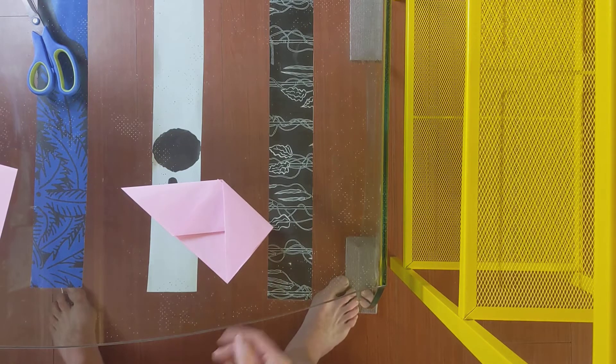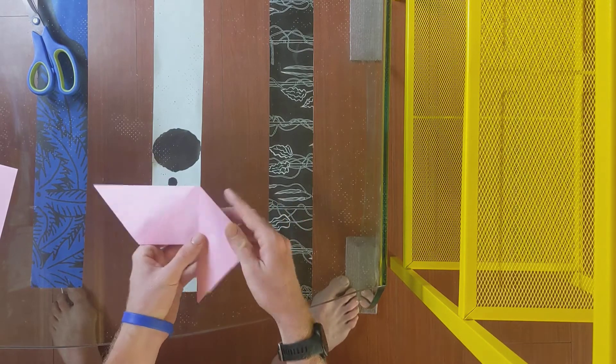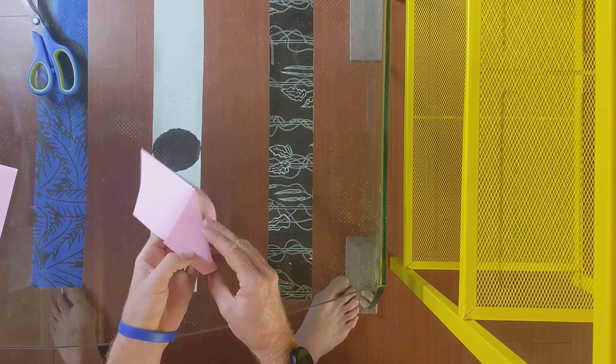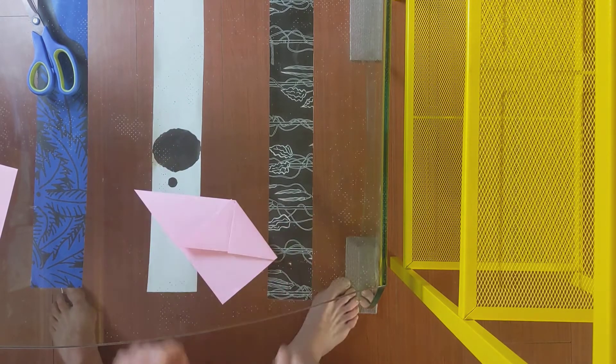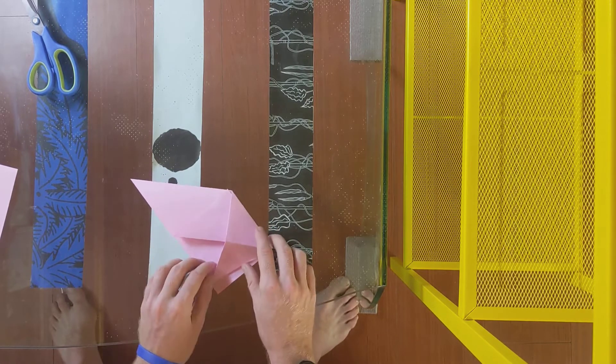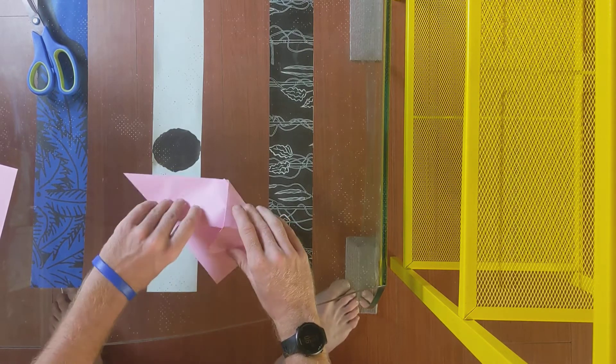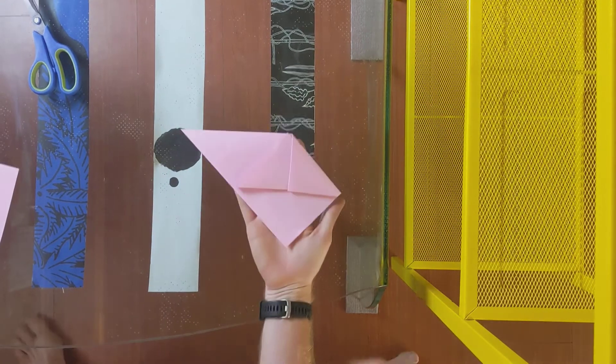And the last step for this side is take this extra triangle right here and you will tuck it inside. This is a little bit tricky. And then fold it down. Okay so all we did was took this little piece here and fold it inside your paper. So now it should look like this.